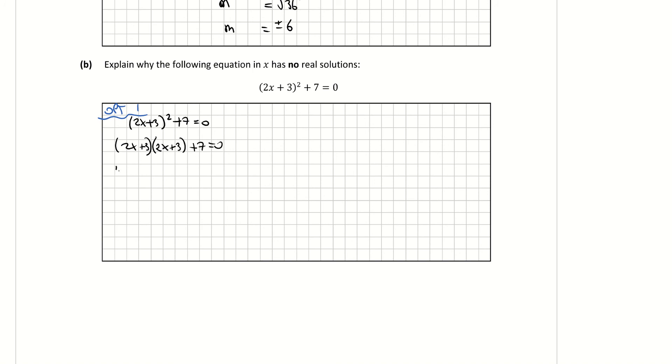When I multiply that out, I get 4x² + 12x + 9 + 7 = 0, which is 4x² + 12x + 16 = 0. Like in part a here, I could use my discriminant, so b² - 4ac, and it's no real solution, so I'm looking for less than 0 here.